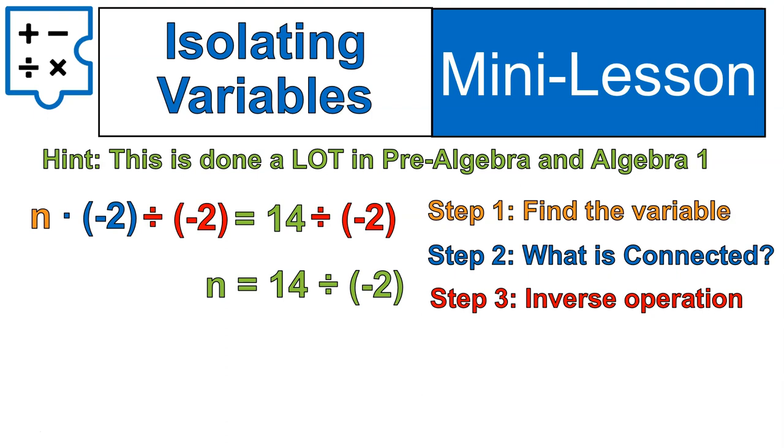Then we have on the right side of this equation, 14 divided by negative 2, and we will solve and simplify. 14 divided by 2 is 7. Positive divided by negative gives us a negative 7 as our final answer. And that's how we solve them.